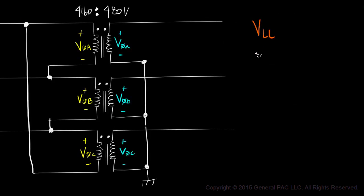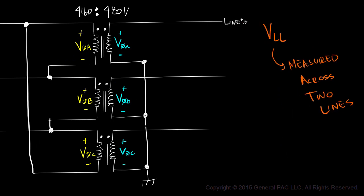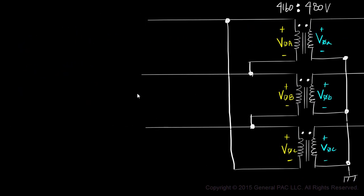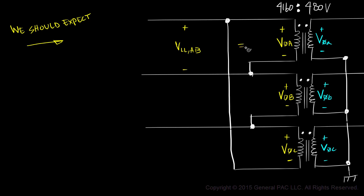Line-to-line voltages, however, are measured across two lines. The most common line-to-line voltages are measured across line A and line B, from line B to line C, and from line C to line A. So on the primary side, where our transformer is connected in Δ, we should expect the line-to-line voltage across line A and line B to equal phase A voltage.